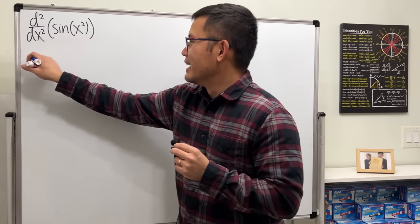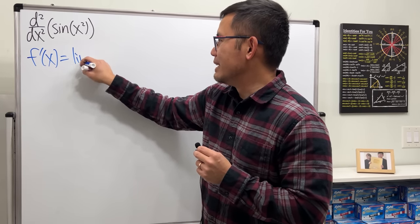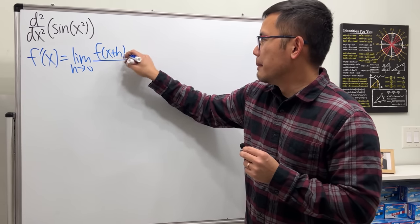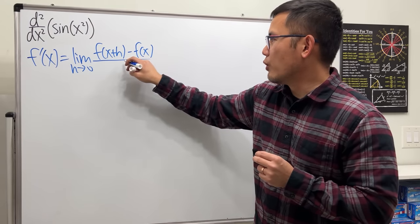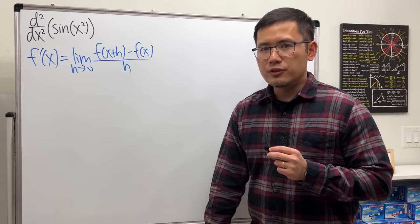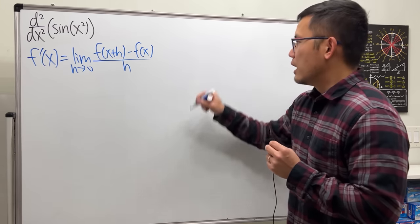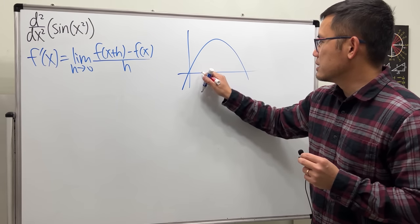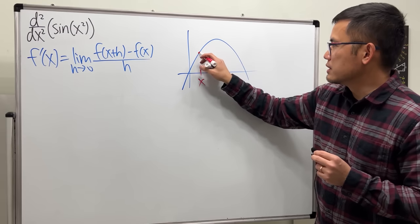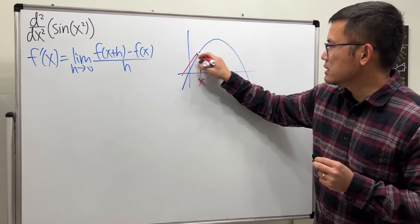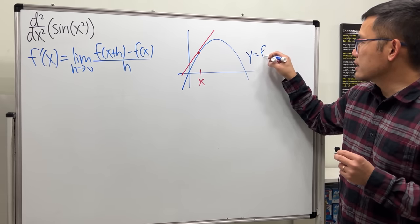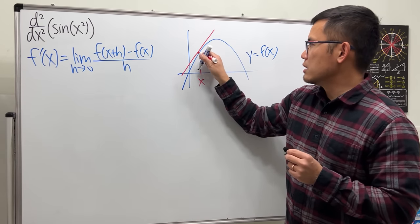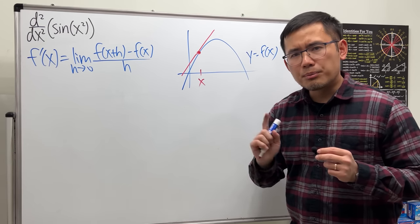Let's review the definition of derivative first. f prime of x equals the limit as h approaches zero of f of x plus h minus f of x, all over h. This pretty much finds the slope of the tangent line. If we have a picture with a point x, here's the tangent line and here is my function f of x. Running through the definition gives us the slope of the tangent line — that's the derivative.